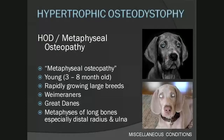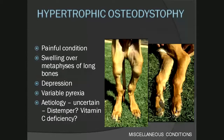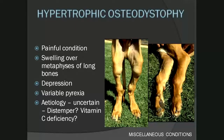Hypertrophic osteodystrophy — abbreviated HOD, also referred to as metaphysial osteopathy — occurs in young dogs three to eight months old and in rapidly growing large breeds. The Weimaraner and Great Dane are overrepresented. The metaphyses of long bones, especially the distal radius and ulna, are most commonly affected. These patients are systemically ill — they may be depressed, have variable pyrexia, diarrhea, anemia, or pneumonia. The etiology is uncertain; distemper has been found in affected lesions and vitamin C deficiency has been suspected, but nothing has been proven.